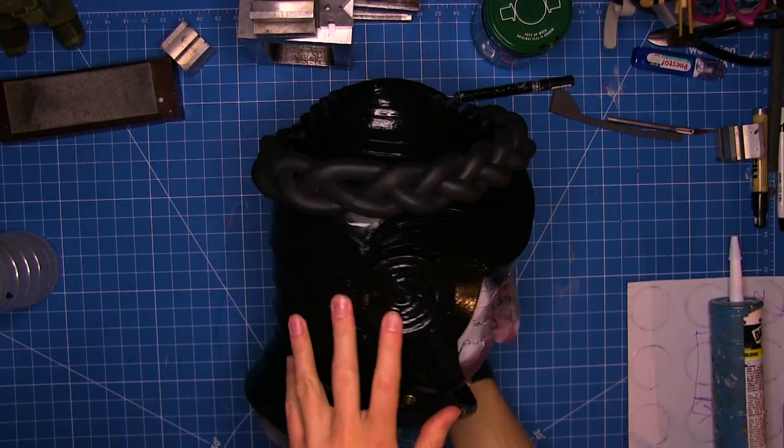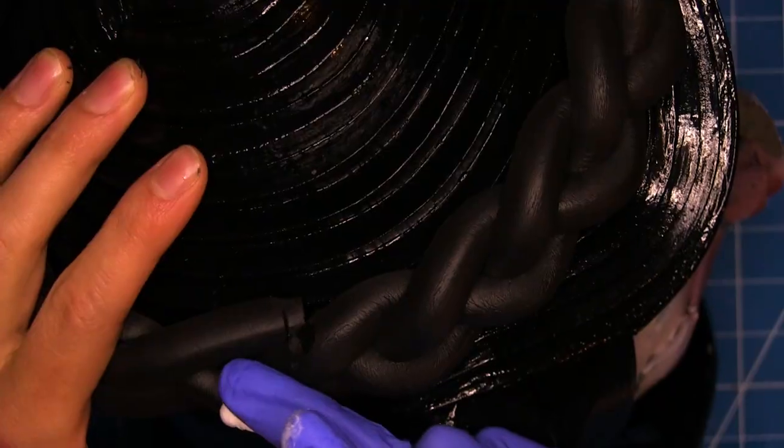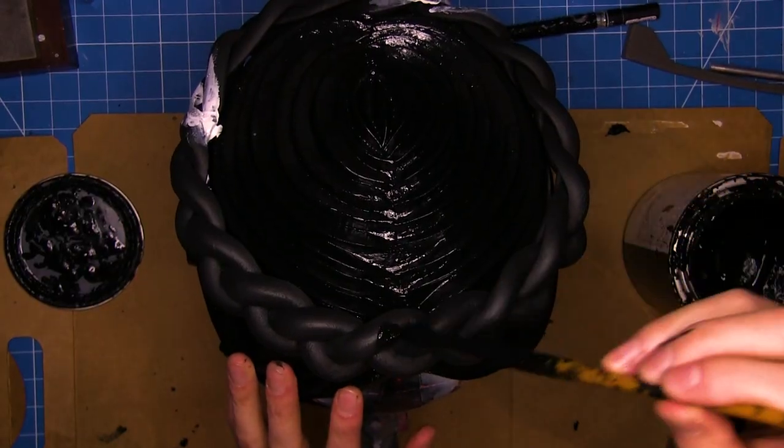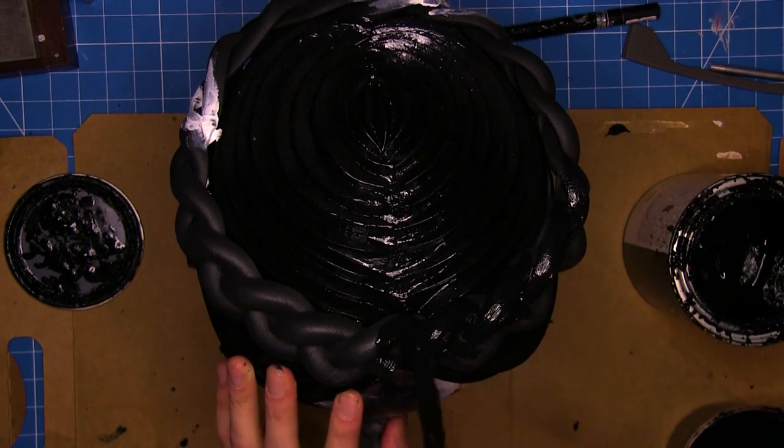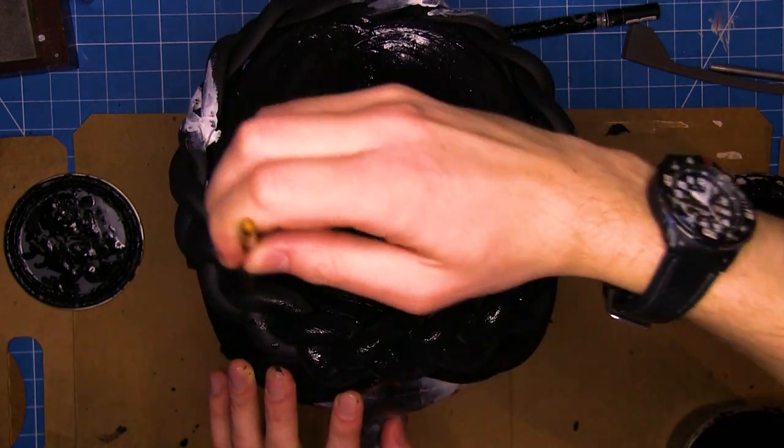And there we go. Then I puttied the part where I had spliced in the new section using more fast dry putty. Now you can see that the sheen or glossiness doesn't quite match. So I gave them more layers of paint. Endless paint.